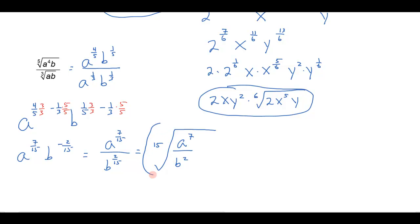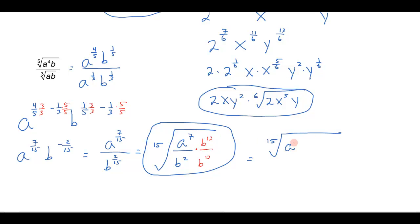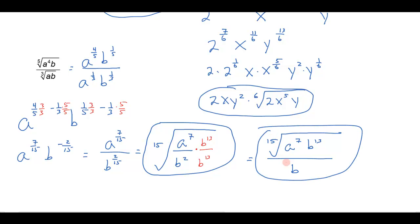Now the answer in the back of the book might leave it like that. Or, if we wanted to rationalize the denominator — to cross all our t's and dot our i's — I'd have to multiply by something that makes the denominator a perfect 15th root. So I'd multiply by b to the 13th over b to the 13th. That gives me the 15th root of a to the 7th times b to the 13th in the numerator, and the 15th root of b to the 15th in the denominator, which is just b. So this rationalized form would probably be the best answer, although answers in the back of the book are sometimes left in the unrationalized form.